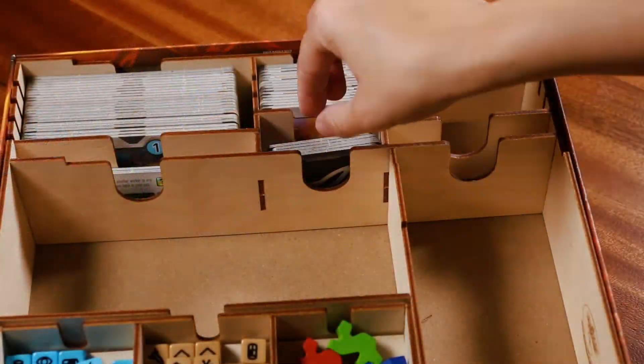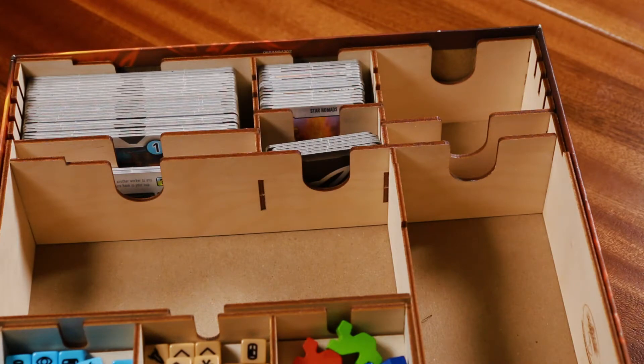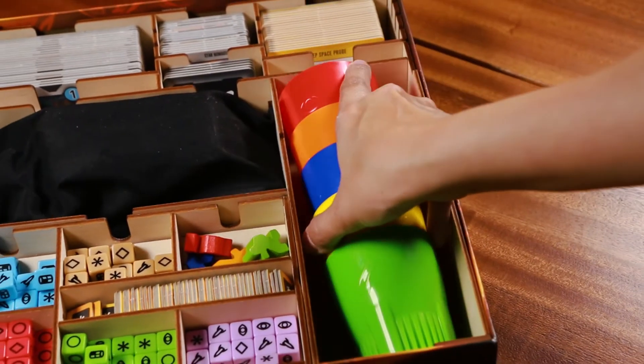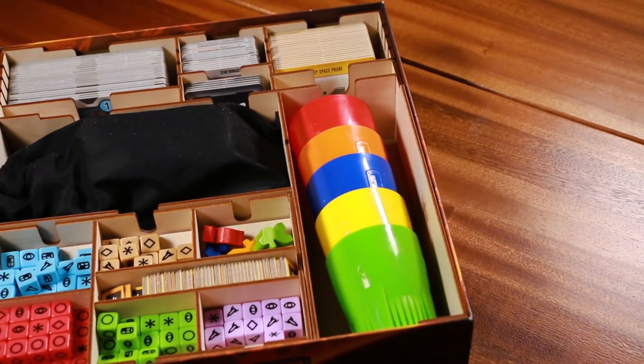The tile sections hold starter tableaus, phase tiles, homeworld tiles, and objectives. There are also two storing sections for the tile bag and the cups.